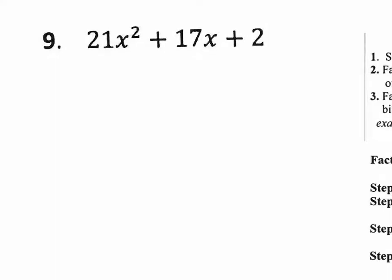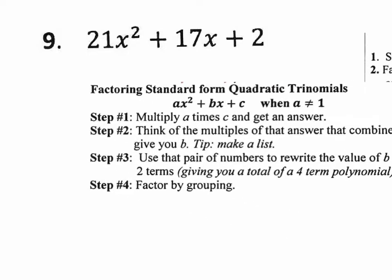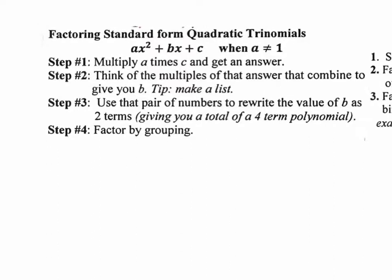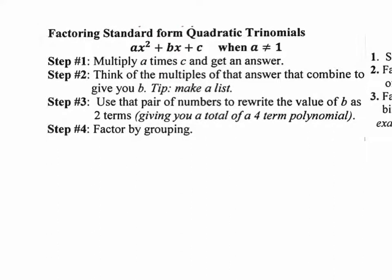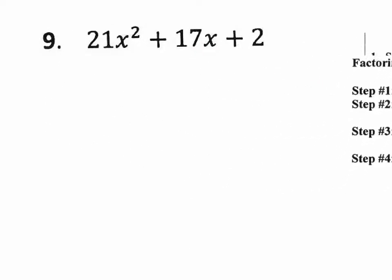So right here, you obviously need to do your steps. What are your steps? Multiply A times C, get an answer. Step two, make a list. Think of the multiples of that answer that combine together to give you the B value. And then you change your trinomial to a polynomial and then factor by grouping.